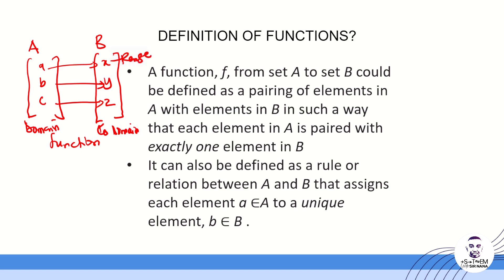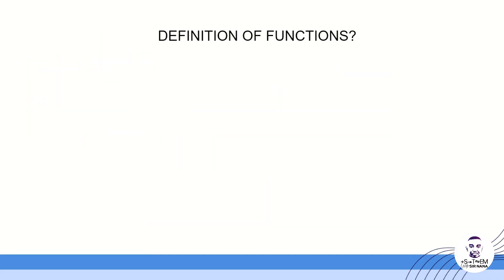A function f from set A to set B can be defined as the pairing of element a with element b such that each element in A is paired with exactly one element in B. We can also define it as a rule or relation between A and B that assigns each element a in A to a unique element b in B.